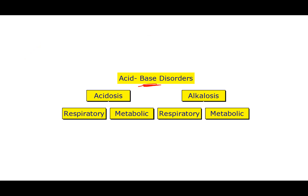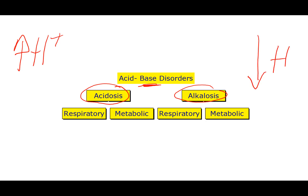Acid-base disorders are either acidosis or alkalosis. Acidosis means an increase in hydrogen ion concentration in the blood; alkalosis means a decrease. Acidosis can have respiratory causes, for example increased CO2 due to respiratory center depression or COPD, or metabolic causes due to extra acid entering the circulation.